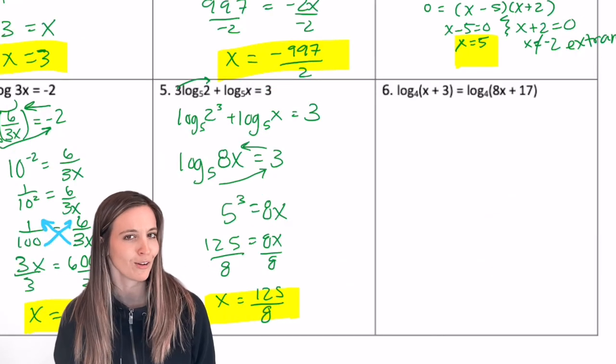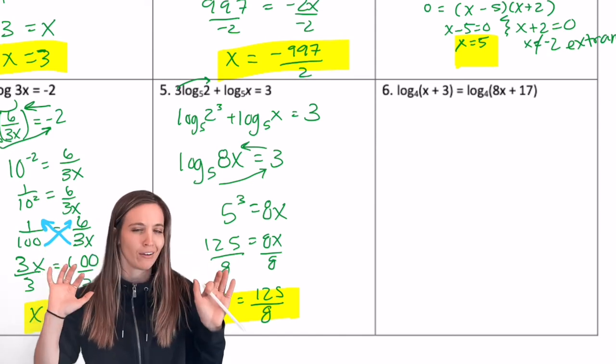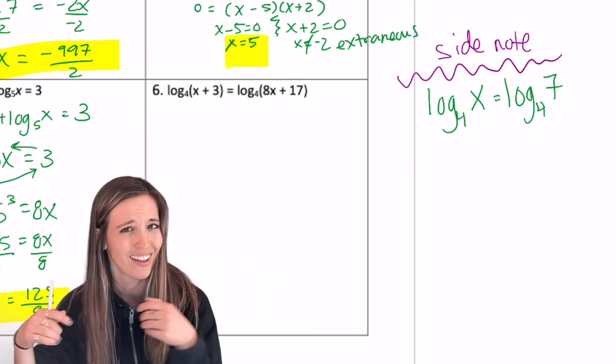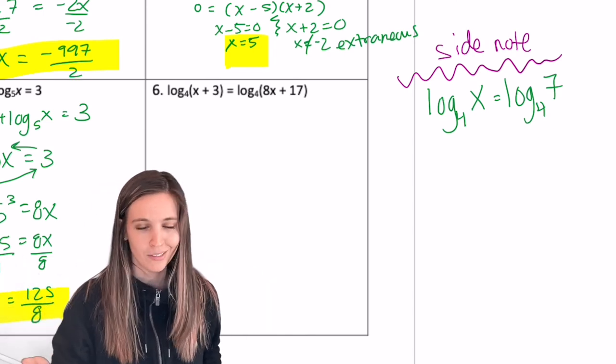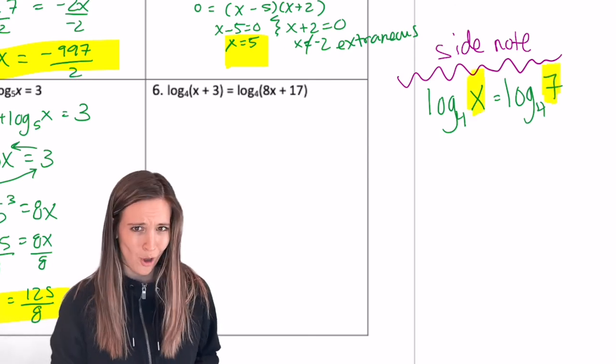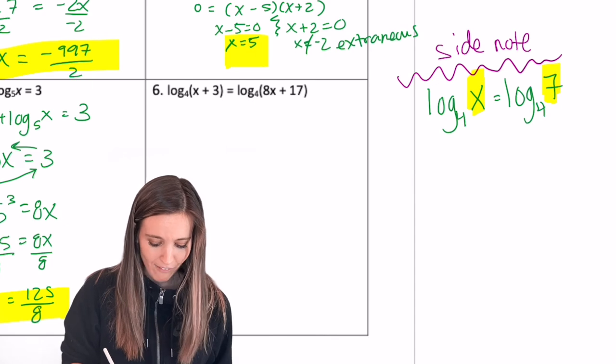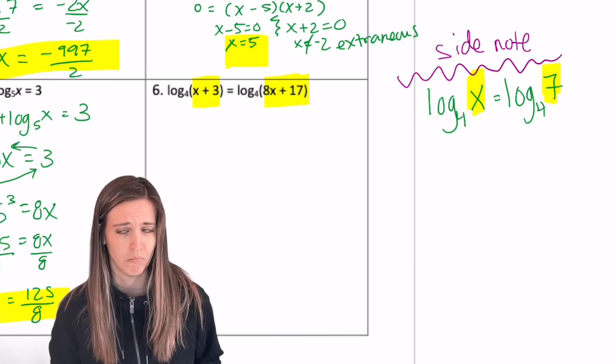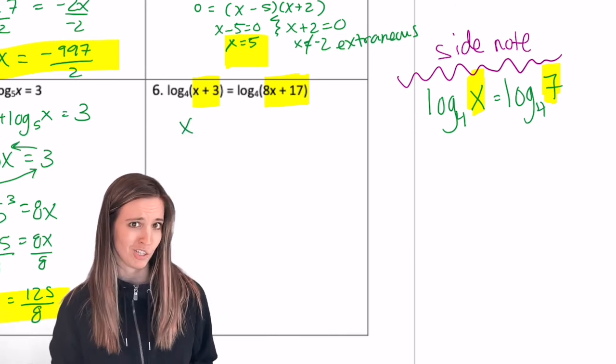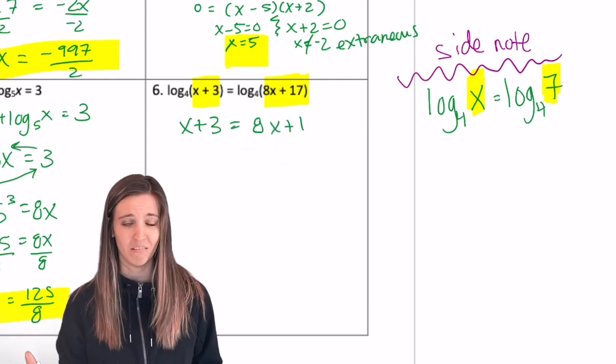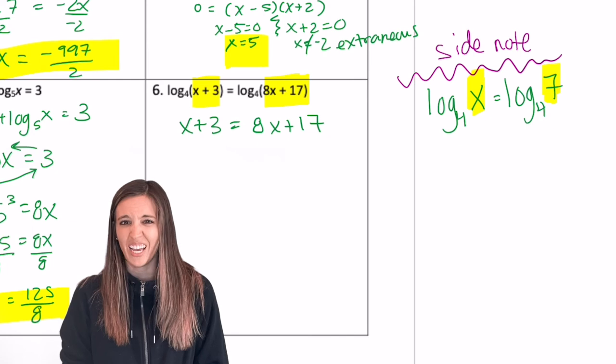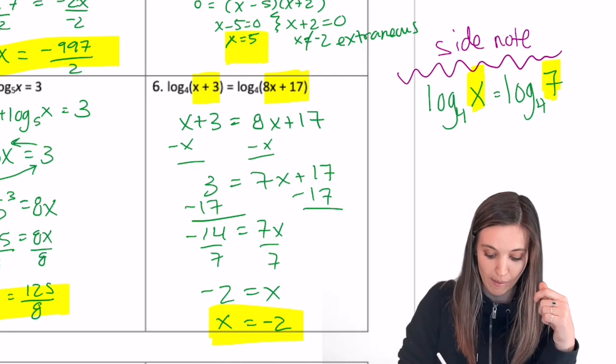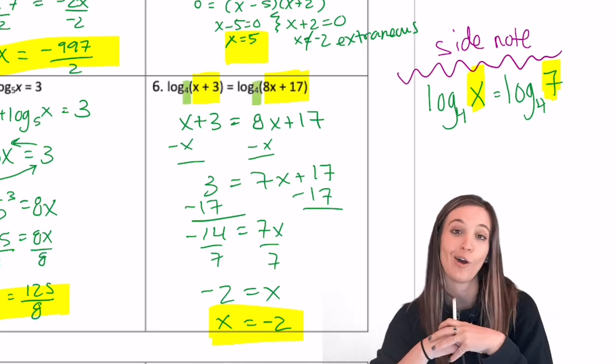Looking at this last one, it can be a little intimidating because I have logs on both sides. But let's step back for a minute. If we think about this in my little side note, we've got log base 4, I'm just going to say of x, equals log base 4 of 7. Well, what's x going to have to be? 7, right? So if I travel back to number 6, I have log base 4 of x plus 3 equals log base 4 of 8x plus 17. So isn't it true that x plus 3 has to equal 8x plus 17? Yeah. Well, now I can just solve. Go for it. So I get x equals negative 2. So now remember, as long as we have the same base with logs on both sides, we can set the arguments equal to solve.